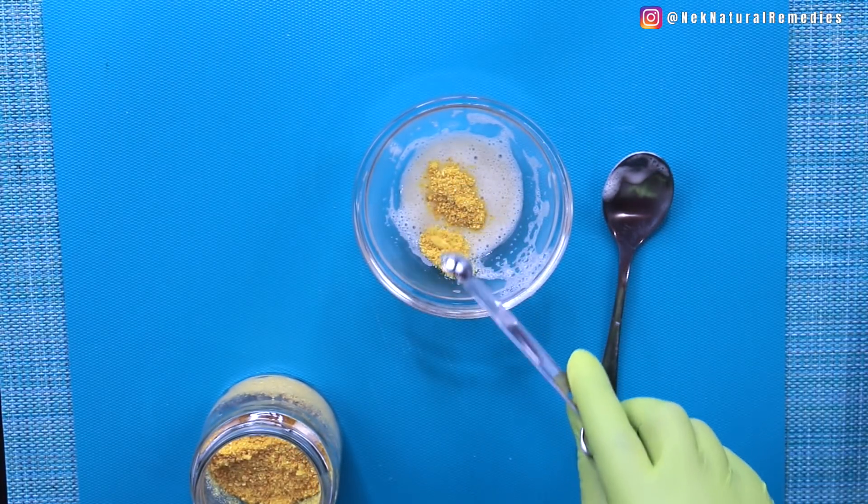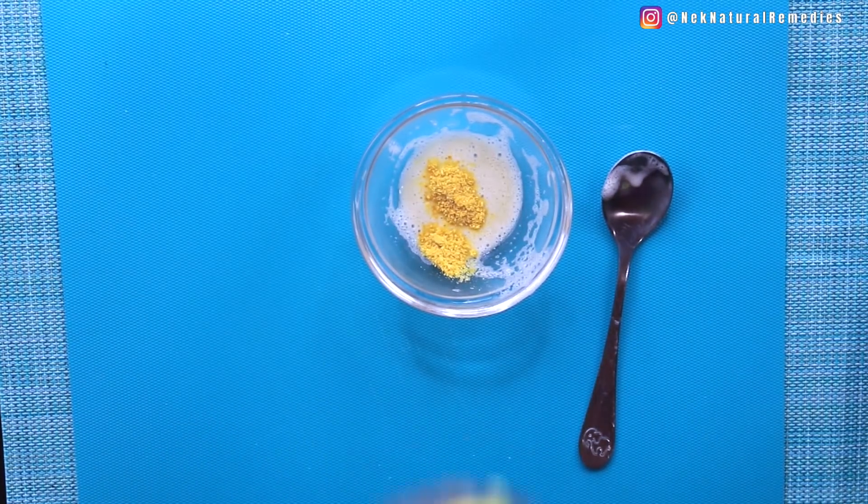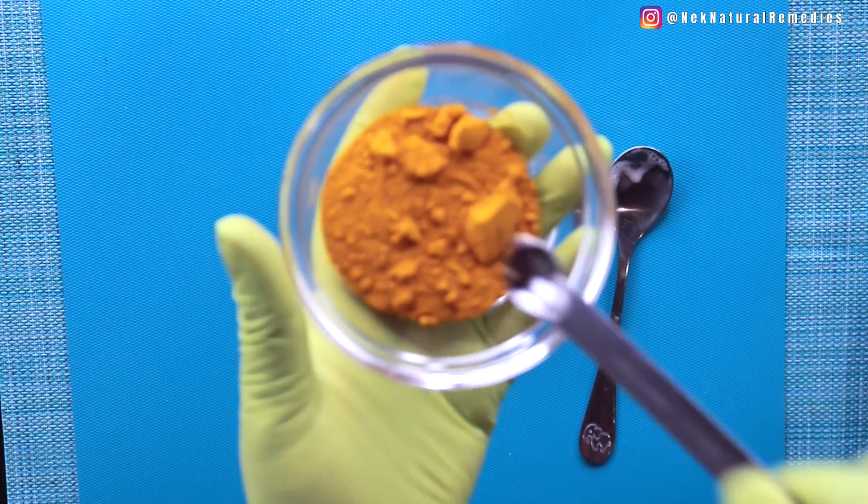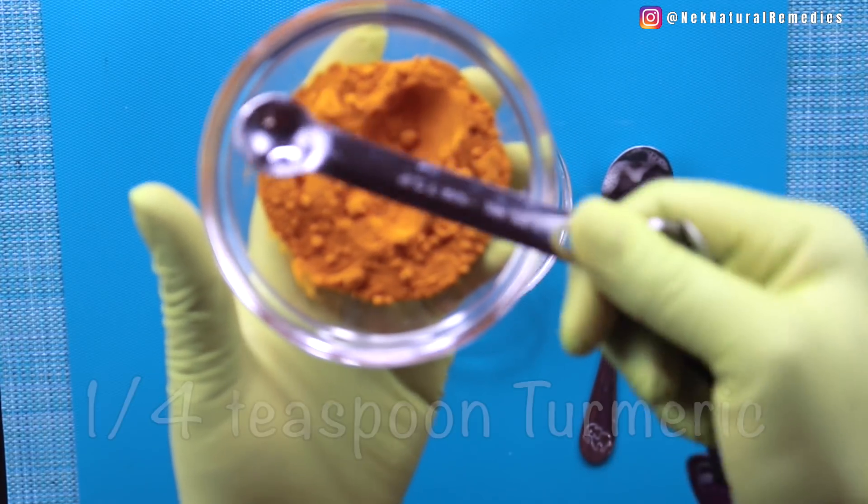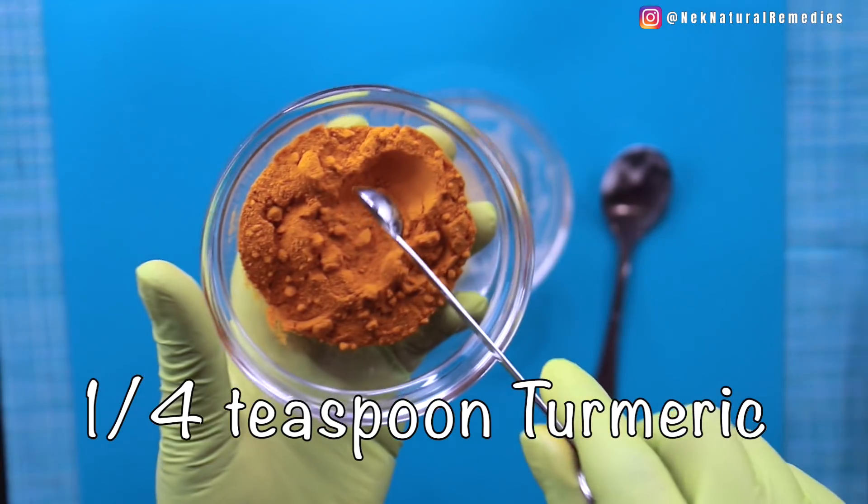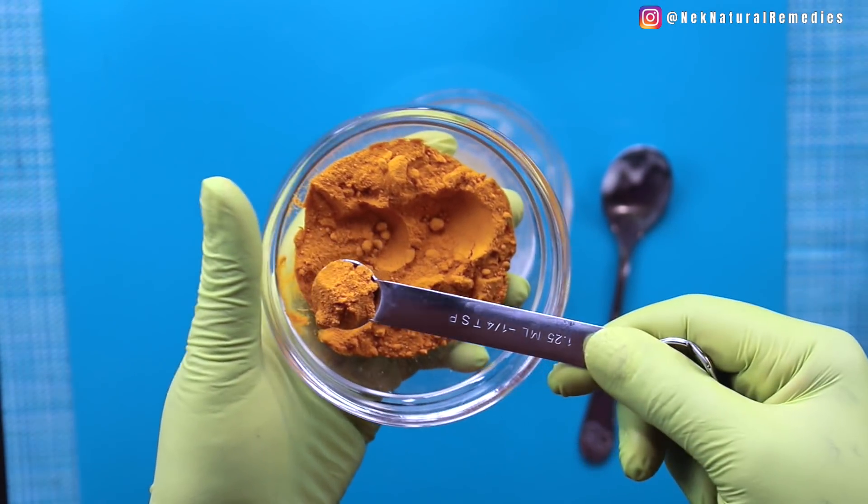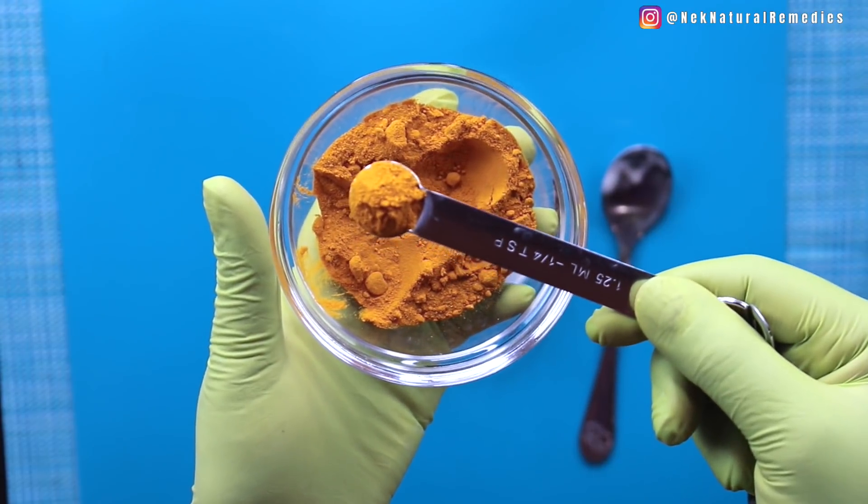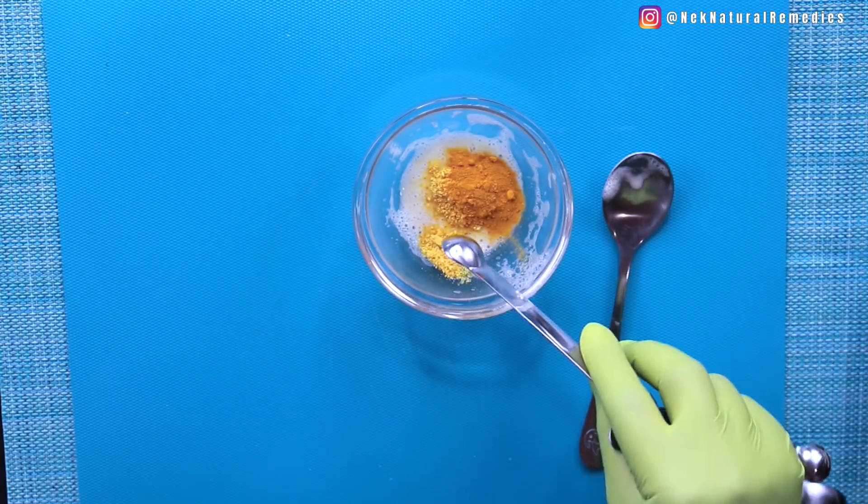And after that, we'll bring our next ingredient which is turmeric. Turmeric is also a root that is very good in many ways, especially to the skin. Turmeric has bleaching agents that help to fade dark spots and hyperpigmentation. It is very good to give your skin glow and look so fresh.